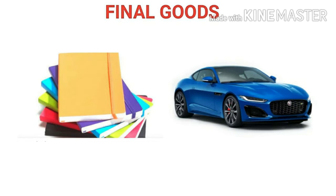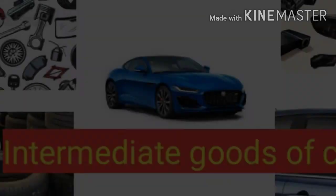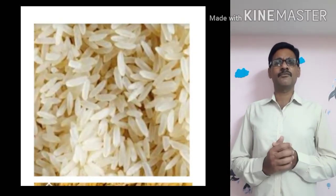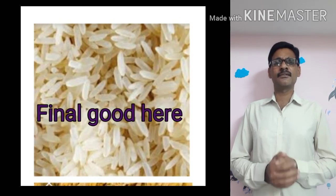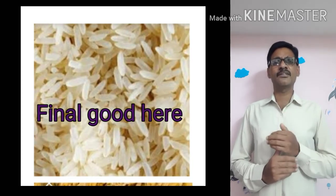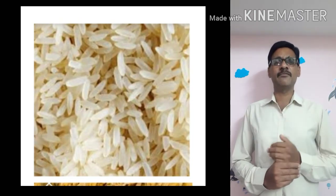For example, notebooks and cars are final goods. The intermediate goods for making a notebook include paper, water, and wood pulp. For making a car, intermediate goods include iron, steel, spare parts, plastic, rubber, and glass. Another example: if a family uses rice to make idlis and dosas for their own consumption, those idlis and dosas are not sold, so they are final goods at the family level.